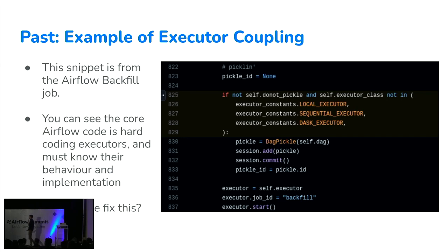Here's an example of coupling: a snippet from the Airflow backfill job around DAG pickling. You can see three executors hard-coded in the Airflow code base — if the executor class is one of these, then pickle, otherwise not. The key question to detect coupling is: if you wanted to write your own executor that supported a feature like pickling, would you have to submit a PR to the Airflow core code base to add your executor? If yes, that's a code smell — that's executor coupling.